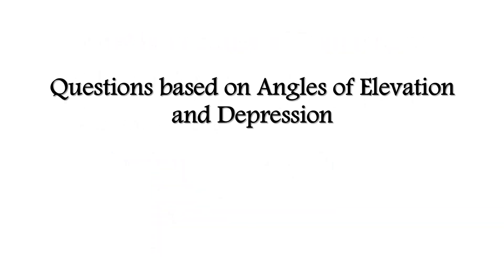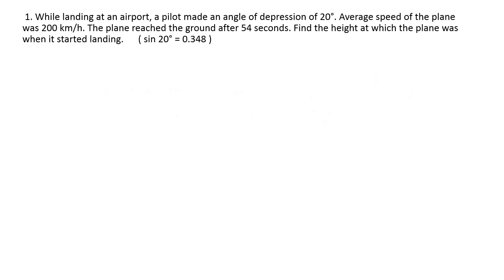Now we are going to see some questions based on angles of elevation and depression. Here is the first question: While landing at an airport, a pilot made an angle of depression of 20 degrees. The speed of the plane was 200 km per hour. The plane reached the ground after 54 seconds. Find the height at which the plane was when it started landing.